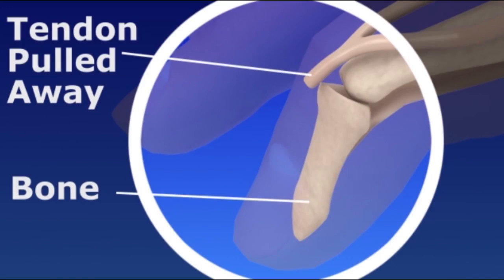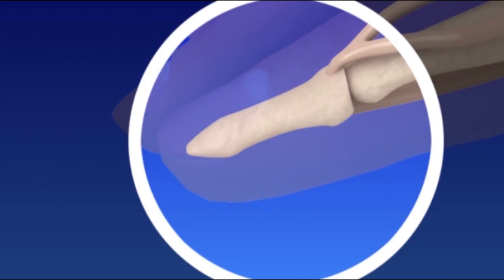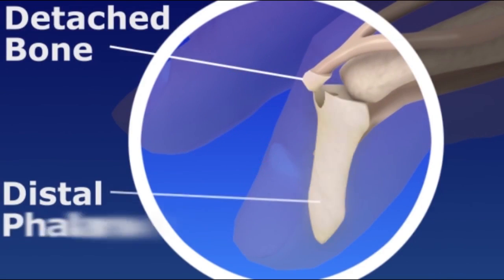The same force can instead cause the tendon to pull off a small piece of bone from the end of the finger, the distal phalanx.